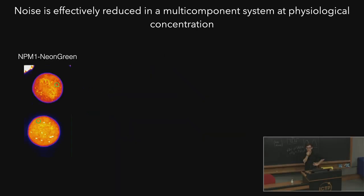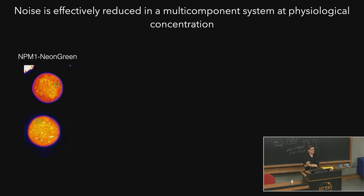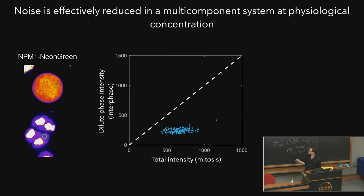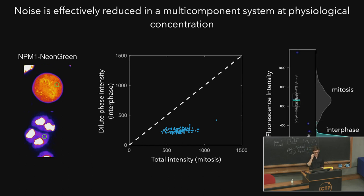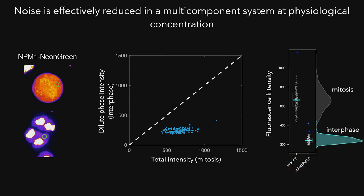The experimental results I've shown so far used an engineered synthetic condensate via over-expression. We also wanted to test this concept at physiological concentrations of an endogenous condensate. We measured concentrations of NPM1 — nucleophosmin — a key component of the nucleolus. We used the same trick of measuring NPM1 during mitosis when the nucleolus is absent and comparing it to nucleoplasmic NPM1 coexisting with the nucleolus. The results show that the variability in protein concentrations is again quite strongly reduced in the presence of these condensates.